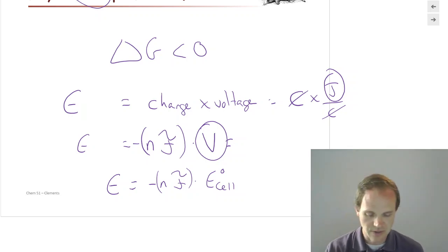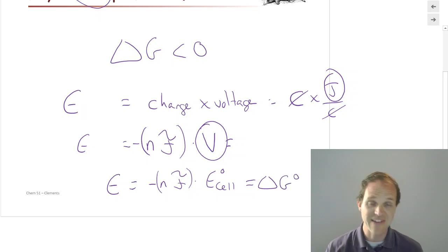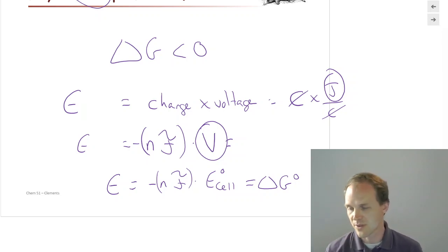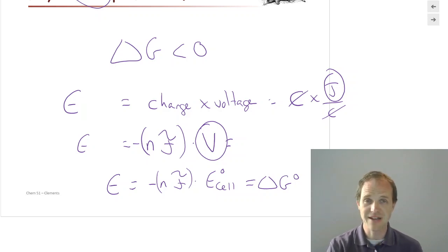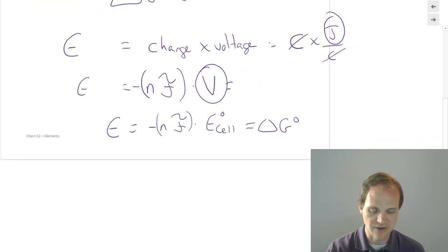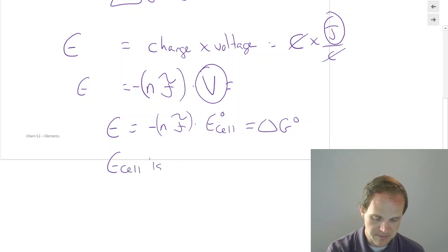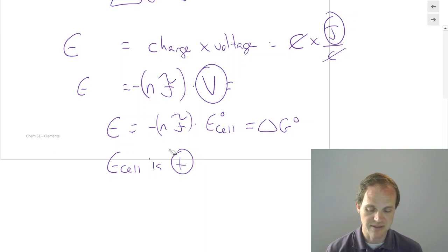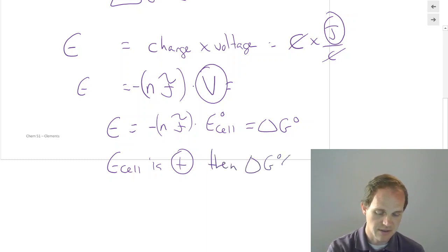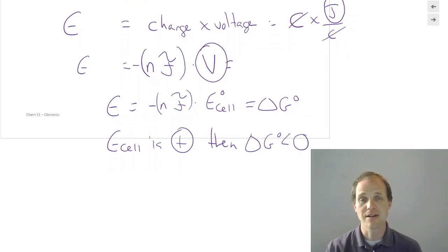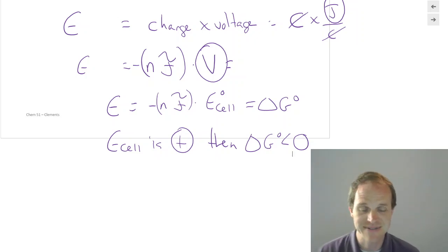What does that mean? If E_cell is positive, Faraday's constant is positive, and n — the number of electrons transferred — is positive, then with the negative sign in front, delta G is less than zero. So whenever we have a positive E_cell, we have a negative delta G, and a negative delta G means the reaction is spontaneous. That's why galvanic cells have positive cell potentials — they correspond to negative delta G values.